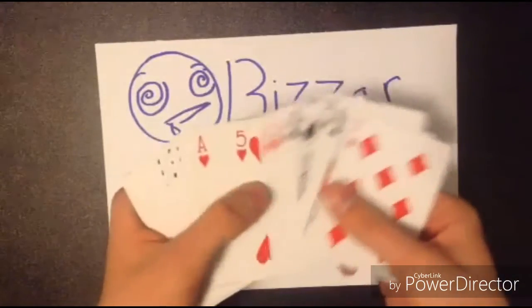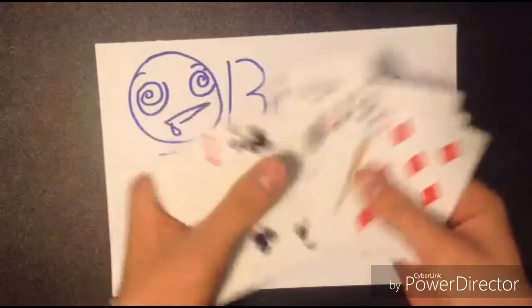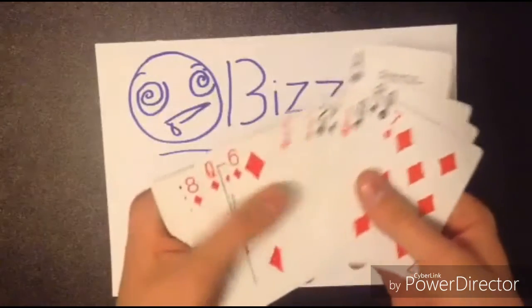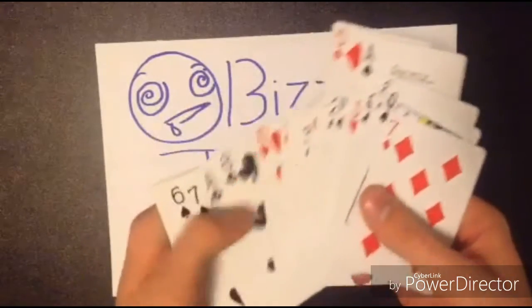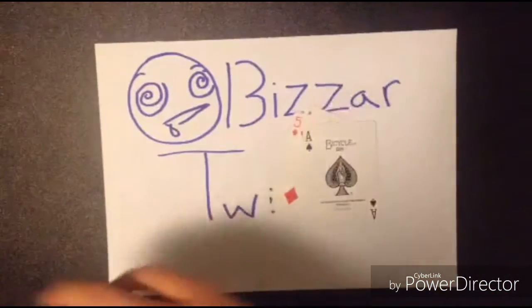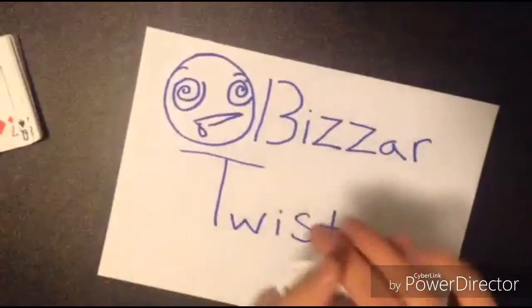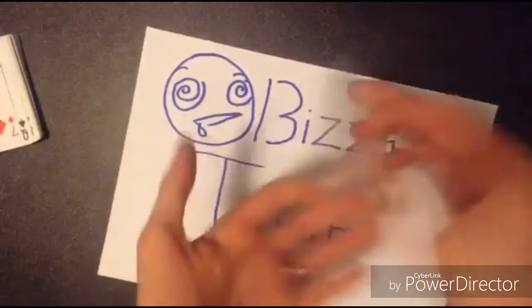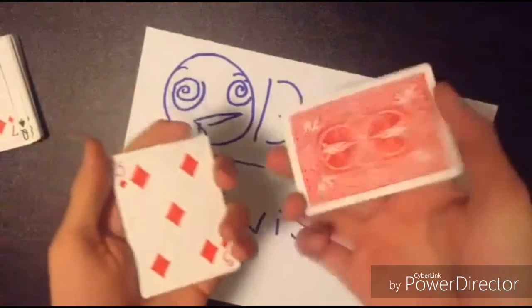So what I'm gonna do is I'm gonna go through the deck and find the two black aces: ace of spades, any other random card say five of diamonds, and there's the other black ace, ace of clubs. I'll use those three cards there.